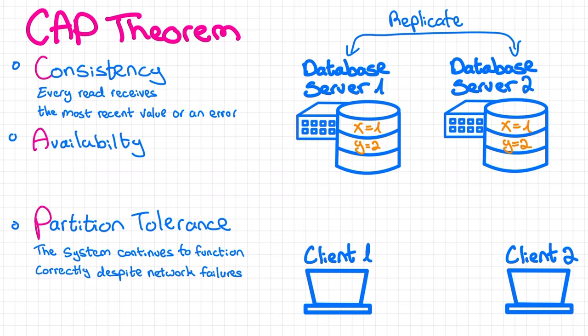The guarantee of availability means that every request for data will have to return a valid response. It will not fail, it will not return an error. It might return stale or inconsistent values, but it will return something.